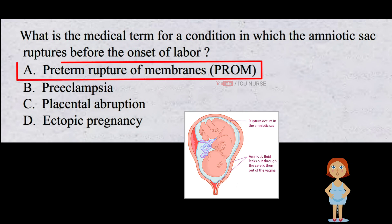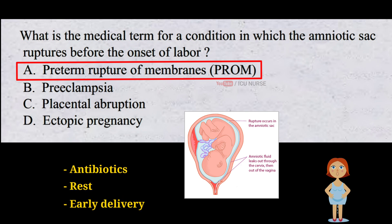Preterm rupture of membranes. Premature rupture of membranes is when the sac around the baby in the womb breaks open too early. This can be dangerous for the baby and mother because it can increase the risk of infection. Doctors may need to give antibiotics, have the mother rest in bed, or deliver the baby early to keep them safe.